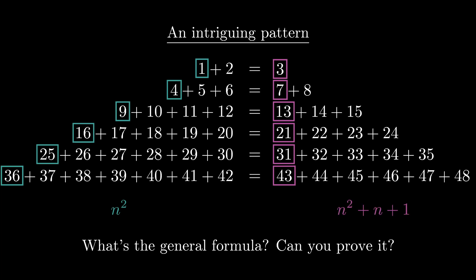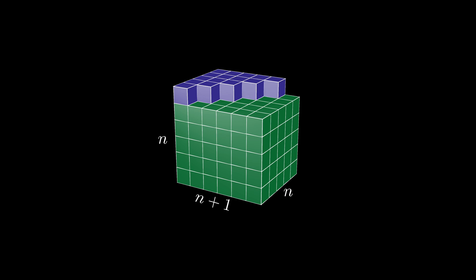Let's investigate a visual representation of these sums in order to uncover the formula. Take n squared times n plus 1 cubes, and place them in a cuboid with dimensions n by n plus 1 by n. On top of this cuboid, place a triangular array of cubes with a base of length n. This adds an extra n times n plus 1 divided by 2 cubes on top of the cuboid.